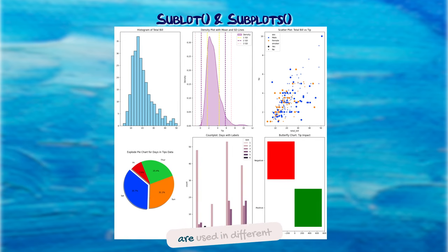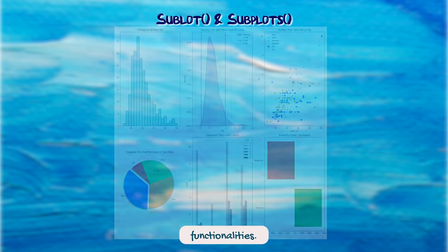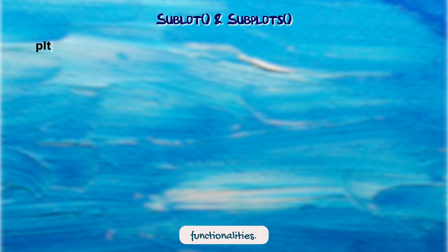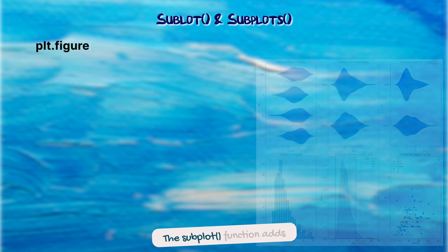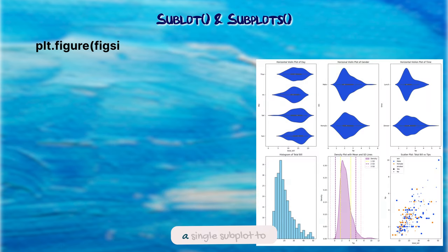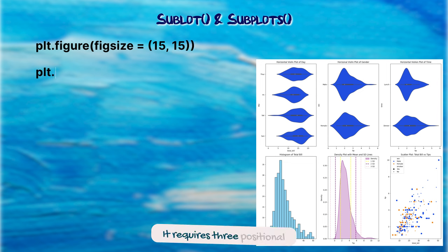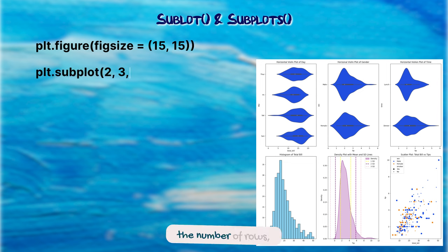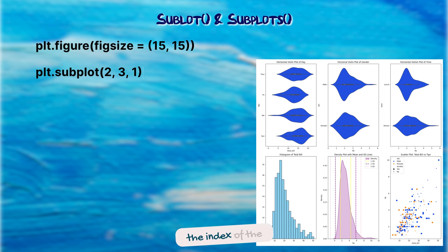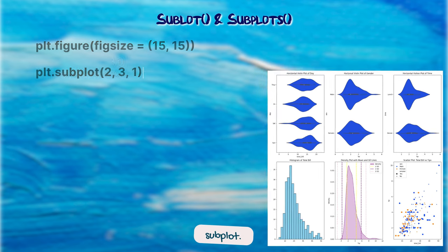The subplot function adds a single subplot to a figure. It requires three positional arguments: the number of rows, number of columns, and the index of the subplot. This function is useful when you want to add subplots one at a time.